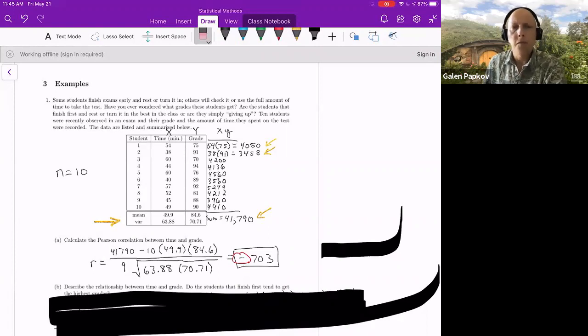And here is the rest of that work. And so 41,790 is in the top left. n is 10. 49.9 and 84.6 are the two sample means. It doesn't matter the order that you multiply. n minus 1 is going to be 9. And then I'm taking the square root again, because those are variances and we want standard deviations. And so when you compute this, you should get negative 0.703.